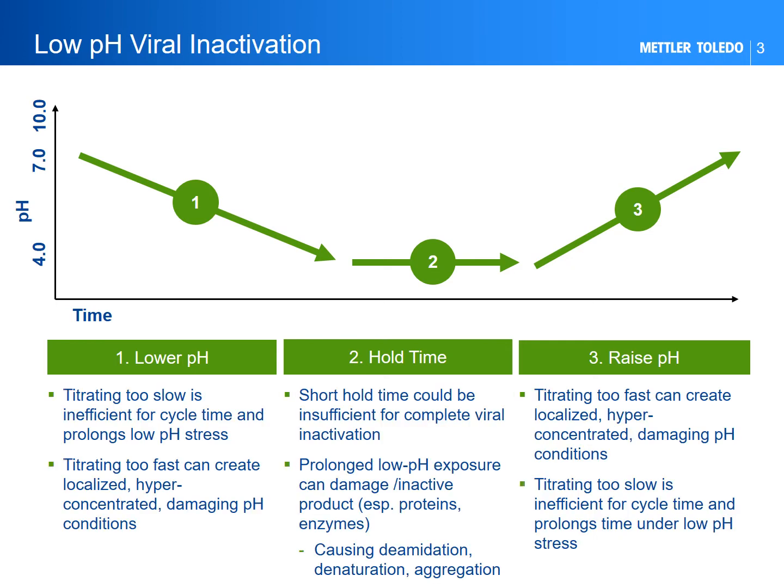A number of challenges surround this perceptively simple operation. Even in a manual viral inactivation process, there are approximate zones for optimal operation, but there are challenges to optimal operation and process development. For example, titrating too slow is both inefficient for cycle time and prolongs low pH stress conditions, while titrating too fast can create localized hyperconcentrated regions of damaging pH conditions.